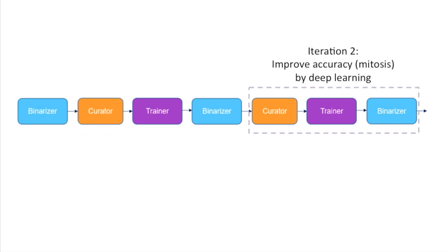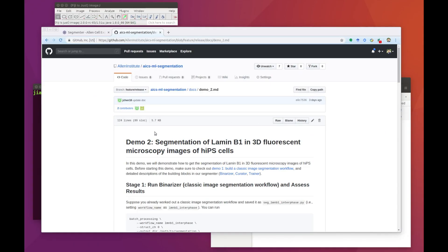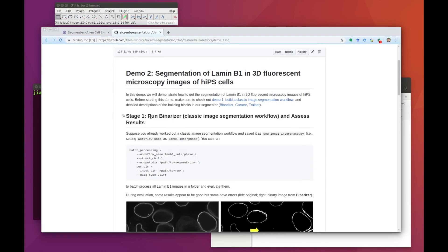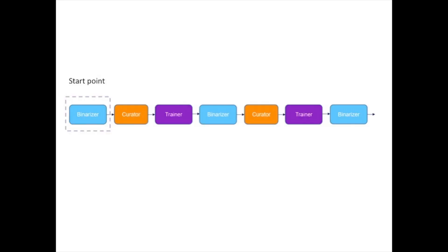Then we'll improve performance of that segmentation algorithm by applying a deep learning approach. We'll combine those results from the first deep learning model and a segmentation from another classic image segmentation workflow that's been optimized for mitotic cells to train a second deep learning model, which will pick up both interphase and mitotic Lamin B1 cells. For the sake of simplicity, we're going to assume that we've already worked out our classic segmentation workflow, and we're going to begin this demonstration by running our classic segmentation workflow from the command line.